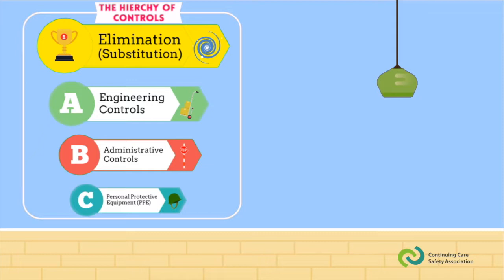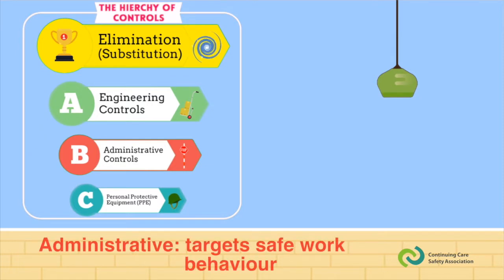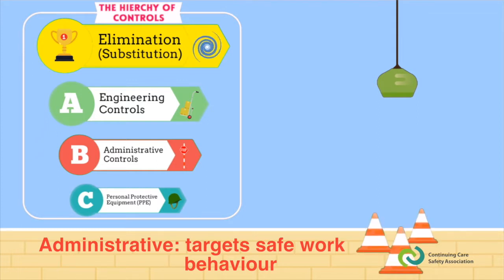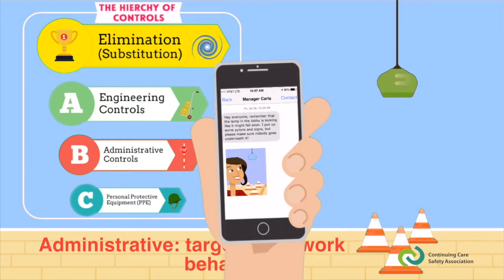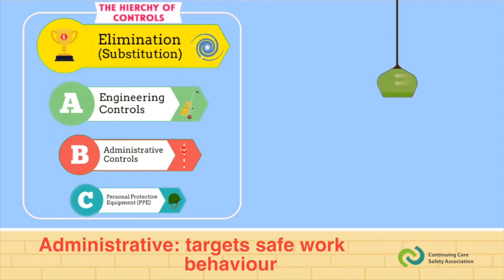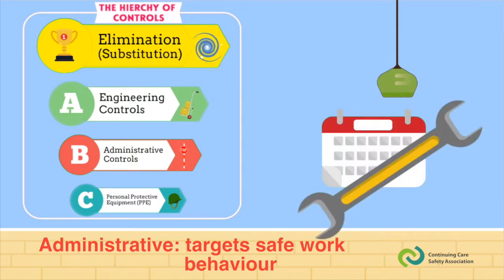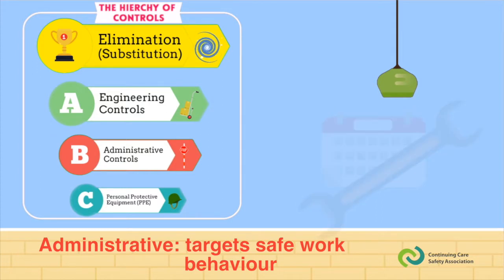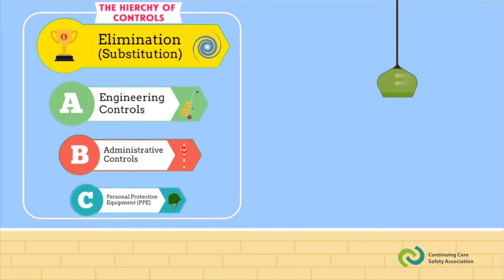The next control on the hierarchy is the administrative control. This is a control that is between you and the hazard. This includes training, communication of important information, wet floor signs, things like that. For our lamp, that would be like having pylons set up around the area that it would fall, and a message from management about what to look out for, as well as a regular schedule of preventative maintenance — maybe it's checked out yearly. Not as good as a cage or a chain, but still something, and a lot cheaper too.